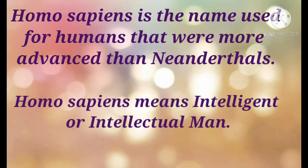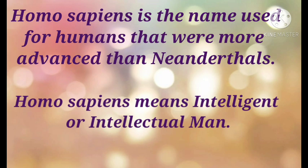Homo sapiens is the name used for humans that were more advanced than the Neanderthals. Homo sapiens means intelligent or intellectual man. The Neanderthals and Homo sapiens were neighbors for some time in Europe. It is believed that due to conflict with Homo sapiens and inability to adapt to environmental changes, the Neanderthals became extinct about 30,000 years ago, based on C14 dating.